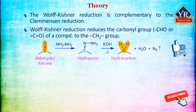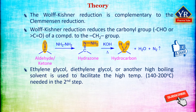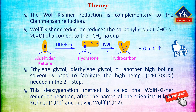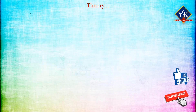During the reaction, an aldehyde or ketone can react with hydrazine to give a hydrazone. The hydrazone can be converted to a hydrocarbon by loss of nitrogen upon heating in the presence of a base. Ethylene glycol, diethylene glycol, or another high boiling solvent is used to facilitate the high temperature ranging from 140 to 200 degrees centigrade needed in the second step. This deoxygenation method is called the Wolf-Kishner reduction reaction after the names of the scientists Ludwig Wolf and Nicolai Kishner.